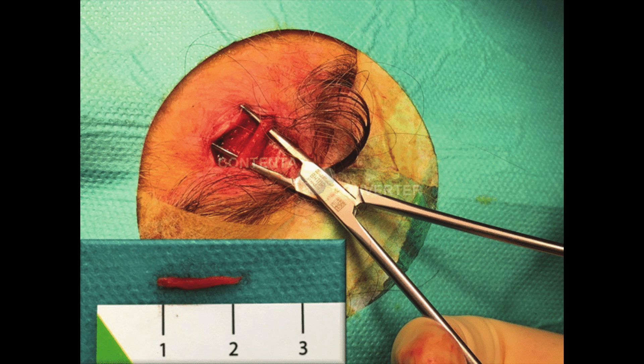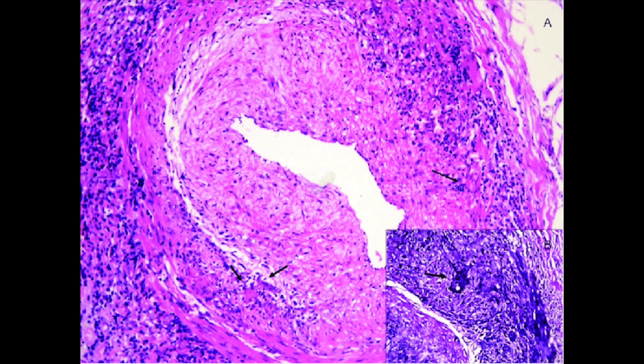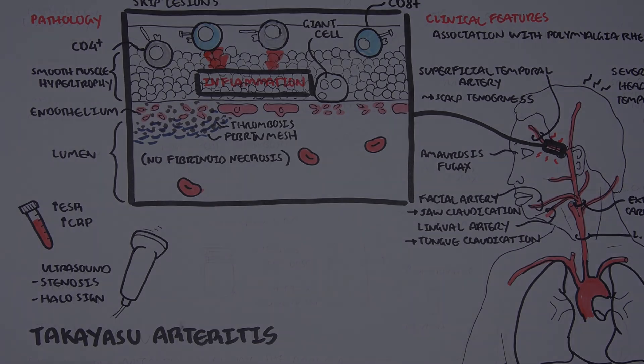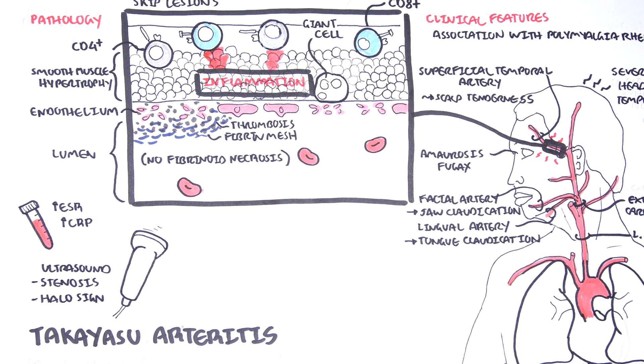Diagnosis of giant cell arteritis is made through a temporal artery biopsy. The biopsy should typically be a good chunk of the artery, because the hallmark of giant cell arteritis is the skip lesions. On biopsy, other findings include immune cell infiltration in the smooth muscle layer and evidence of panarthritis. Diagnosis should not delay treatment because of the risk of organ ischemia, including visual loss and jaw claudication.